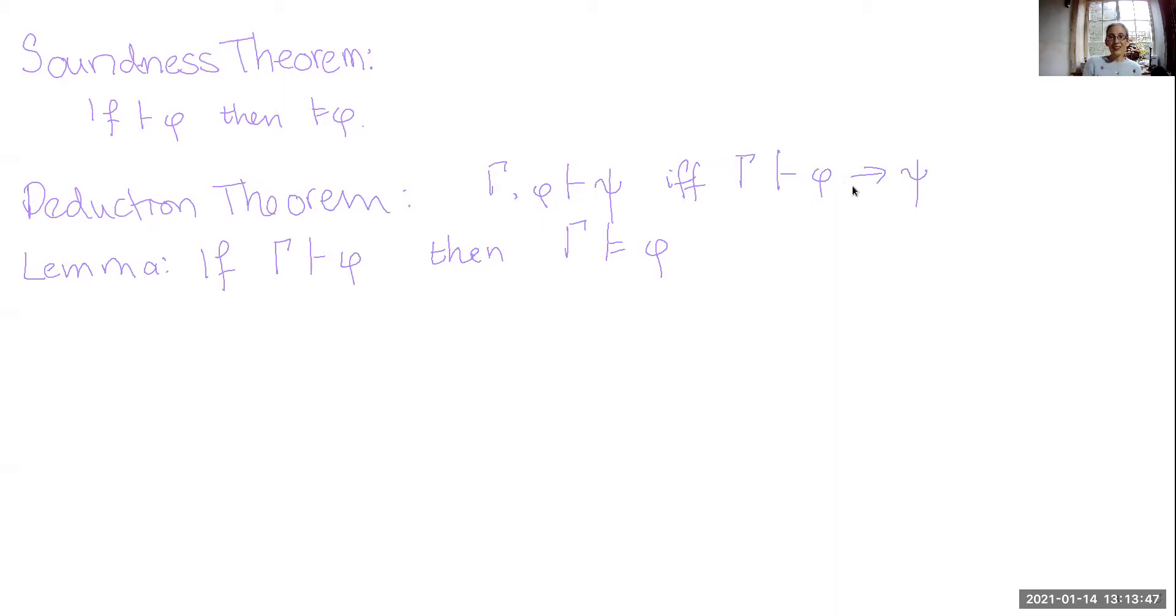What the deduction theorem allows us to do is, if we can prove this, we can peel away every one of these assumptions, turning them into conditionals until eventually we have something of this form. It just allows us to simplify things a little bit. We know we can get rid of these assumptions, but we don't have to.